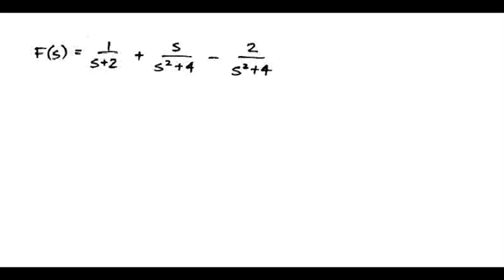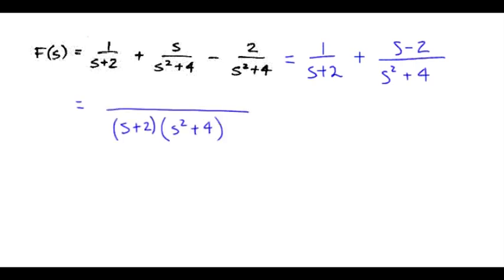Let's first go ahead and start operating on this function a bit. That's the result of combining the two terms on the right side. I'll continue by getting a common denominator. Then we need to take 1 times the s squared plus 4 term plus s plus 2 times the s minus 2 term.